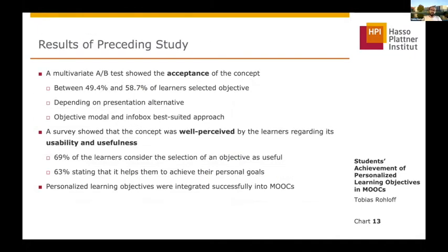This is based on the preceding study, in which we did a UI test for the acceptance of the concept. In that study, between around 49 and 58 percent of the learners selected an objective. The numbers were dependent on the presentation alternative, and at the end the modal and infobox combined approach was the best suited. We also conducted a survey about the usability and usefulness. Around 69 percent of the learners considered the selection of an objective as useful, and 63 percent stated that it helped them to achieve their personal goals.